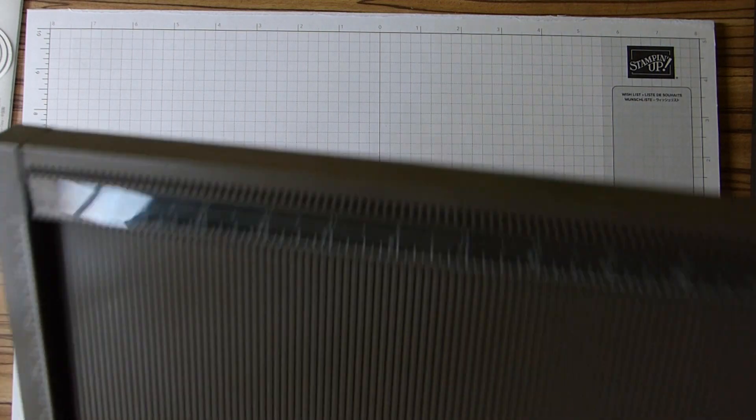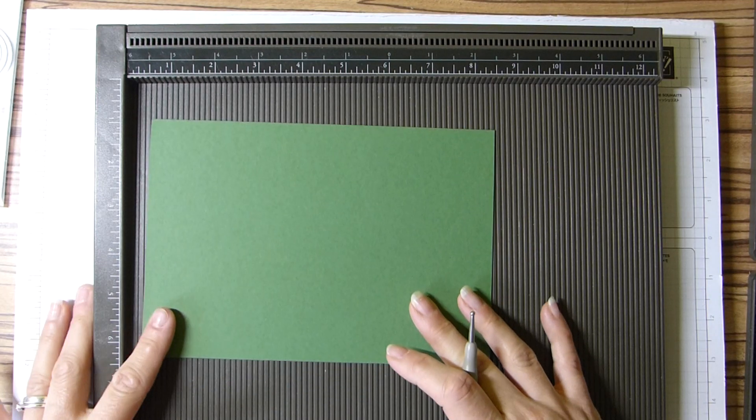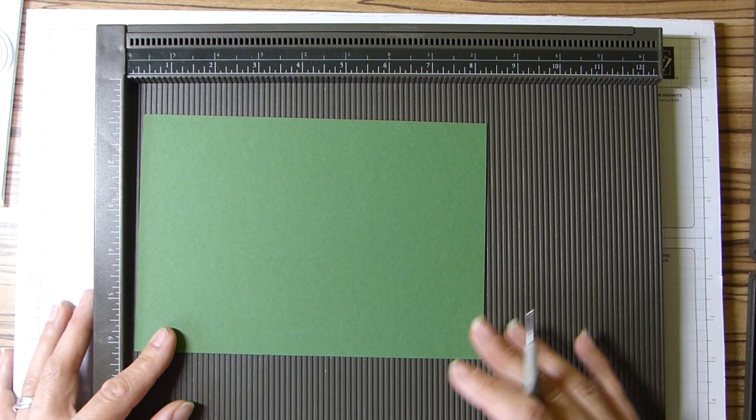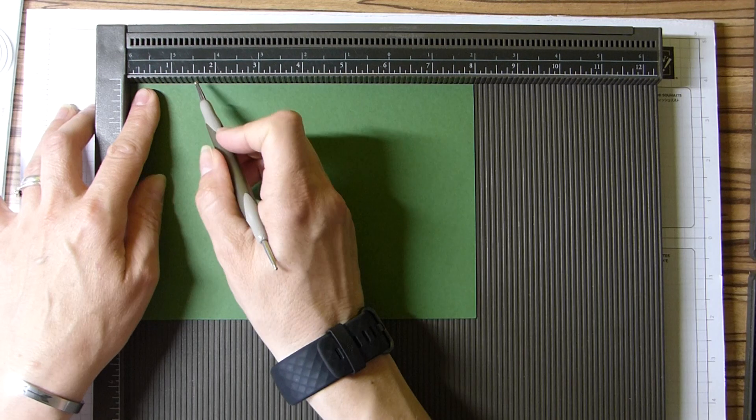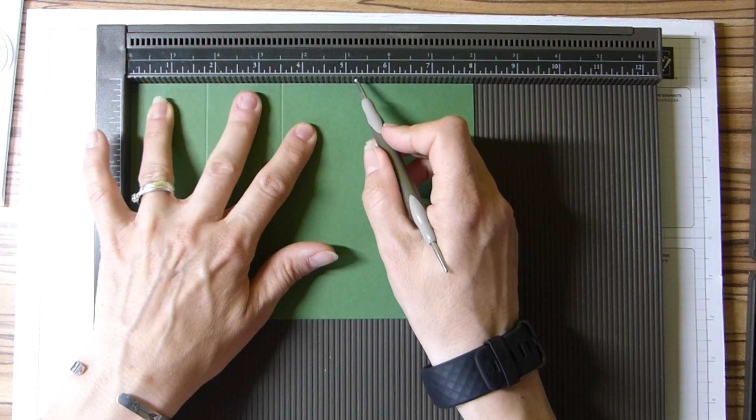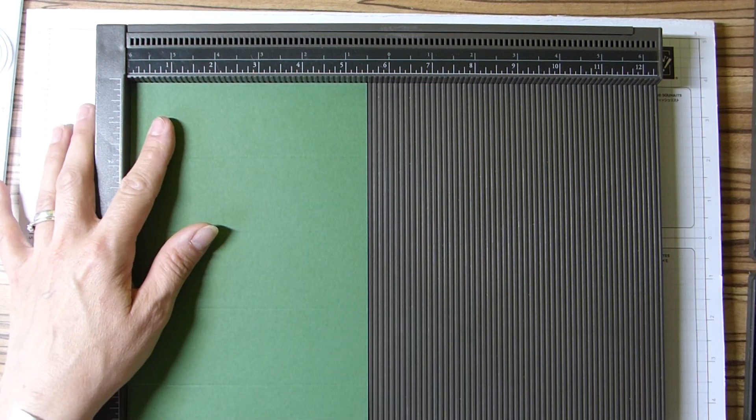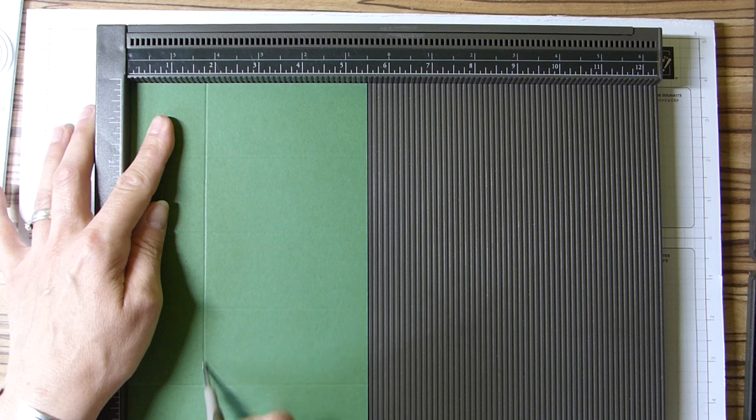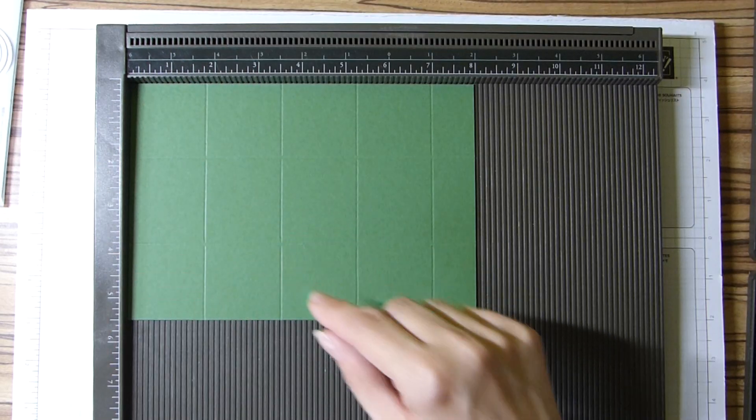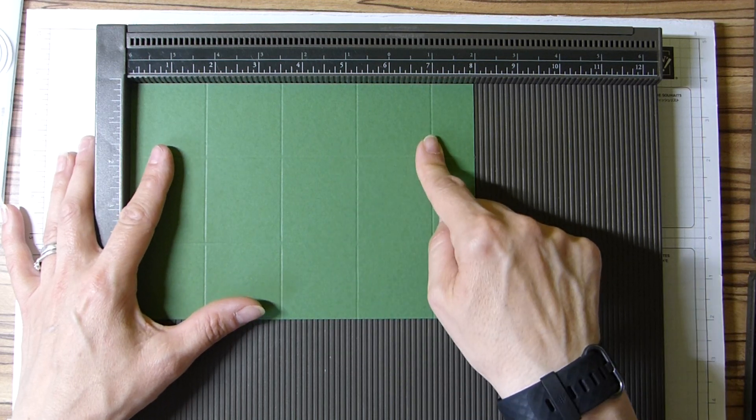As always, we need our scoring board and we need some cardstock that measures 8 by 5.5 inches, which is 20 by 14 centimeters. On the long side, we're going to score at 1 and 3/4, 3 and 1/2, 5 and 1/4, and 7 inches. In centimeters, that will be 4 and 1/2, 9, 13 and 1/2, and 18.